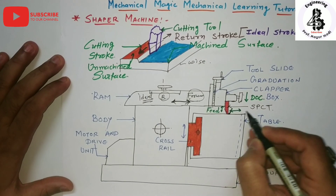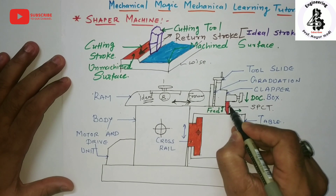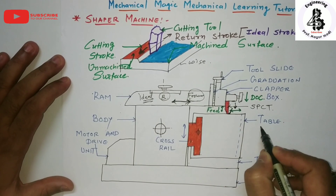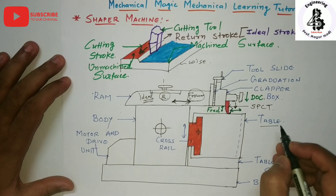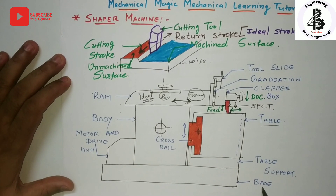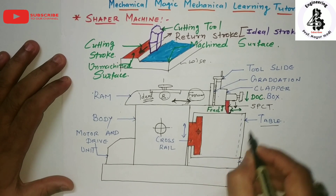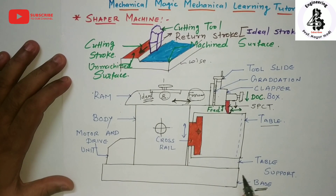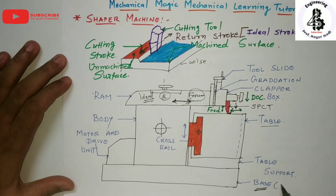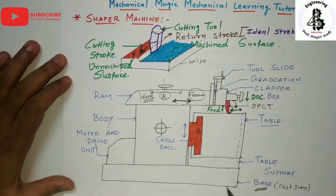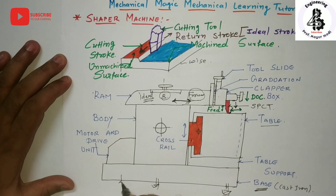The depth of cut is adjusted by moving the tool downward, providing the required depth according to the table size and workpiece. Now looking at the construction of the shaper machine: the base supports all the assembly of the machine, takes up the entire load, and absorbs forces set up by the cutting tool on the workpiece. It is generally made of cast iron and is rigidly bolted to the floor, providing resistance to vibrations during cutting.